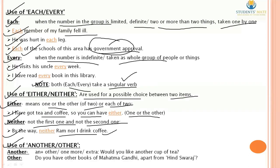Use of 'another' and 'other'. 'Another' is made of 'an' plus 'other' — it means extra or one more. Example: 'Would you like another cup of tea?' — meaning you have taken one, do you want an extra one? 'Other' refers to different remaining options. Example: 'Do you have other books of Mahatma Gandhi apart from Hind Swaraj?'